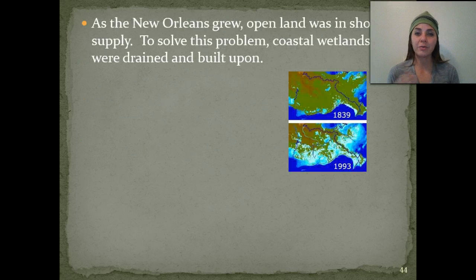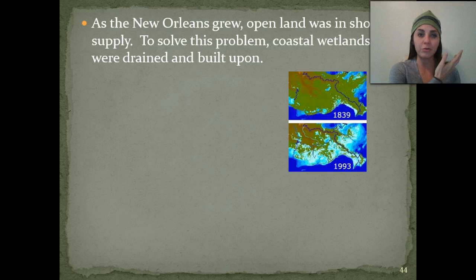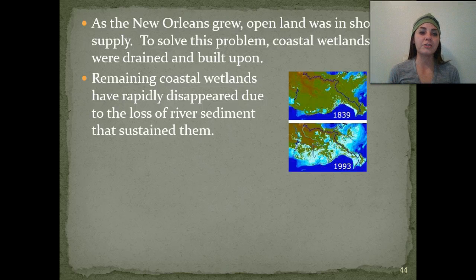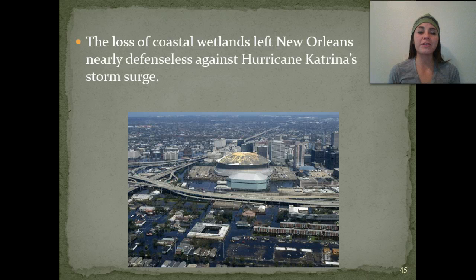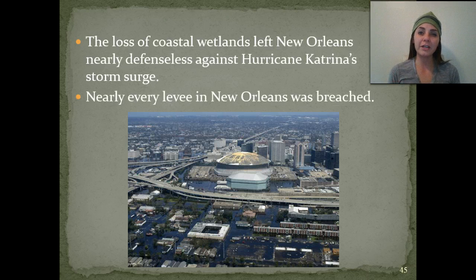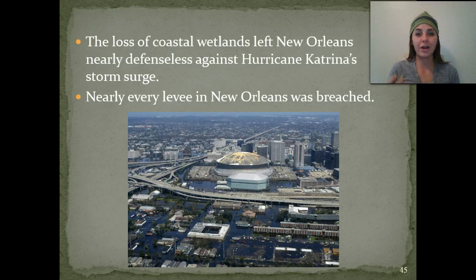Going back to our case study of New Orleans and Hurricane Katrina: as New Orleans' city grew, open land was in short supply, so we wiped out coastal wetlands — they were drained and we started building the city upon them. The remaining wetlands disappeared due to loss of river sediment that sustained them. The loss of the coastal wetlands left New Orleans nearly defenseless when Hurricane Katrina hit. Almost every single levee was breached, tides went over the levees and flooded the entire town. New Orleans is basically in a bowl because it has been sinking slowly, so the flooding was horrible.